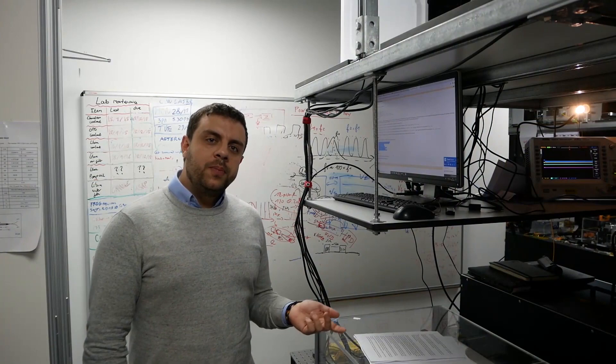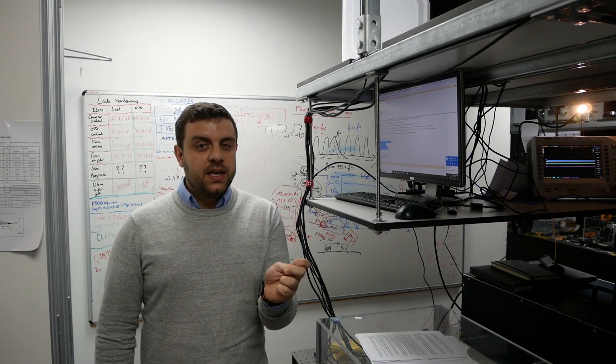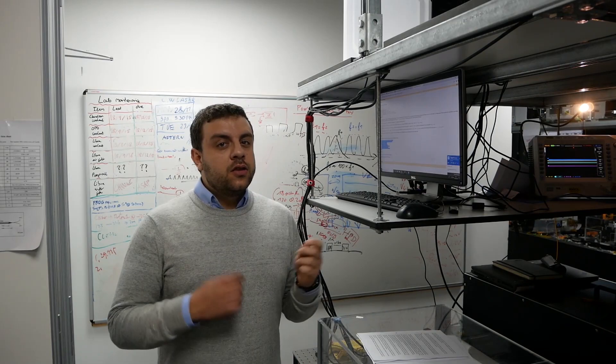If you want to build a clock, the first thing that you need to set is a precise reference which dictates its ticking. Think for example of the pendulum of a cuckoo clock. In an atomic optical clock, the reference is set by the electromagnetic oscillations of an atom confined in a small chamber.